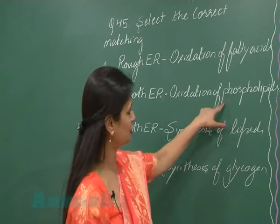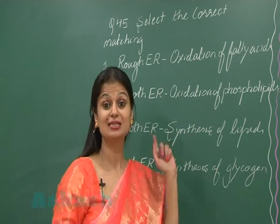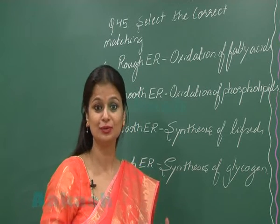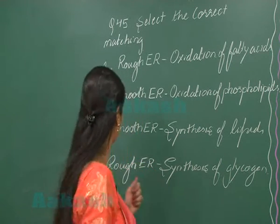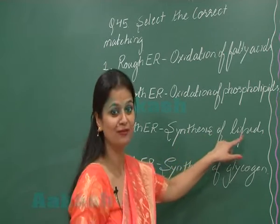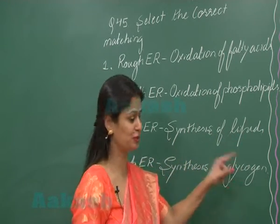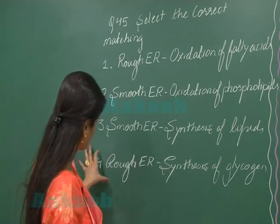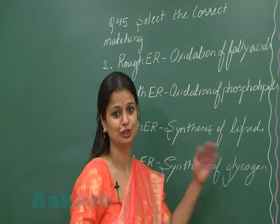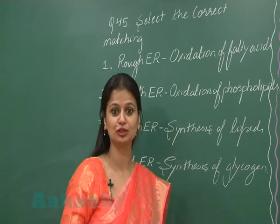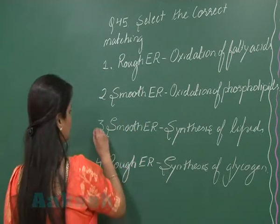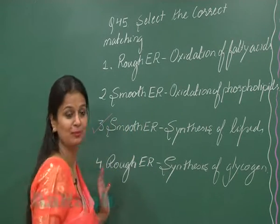Smooth endoplasmic reticulum is involved in oxidation of phospholipids, synthesis of lipids, and synthesis of glycogen. Smooth endoplasmic reticulum — synthesis of lipids — so this is the right option. Option number 4, rough ER involved in synthesis of glycogen — no, again this is a function of smooth endoplasmic reticulum. So the right option here is option number 3.